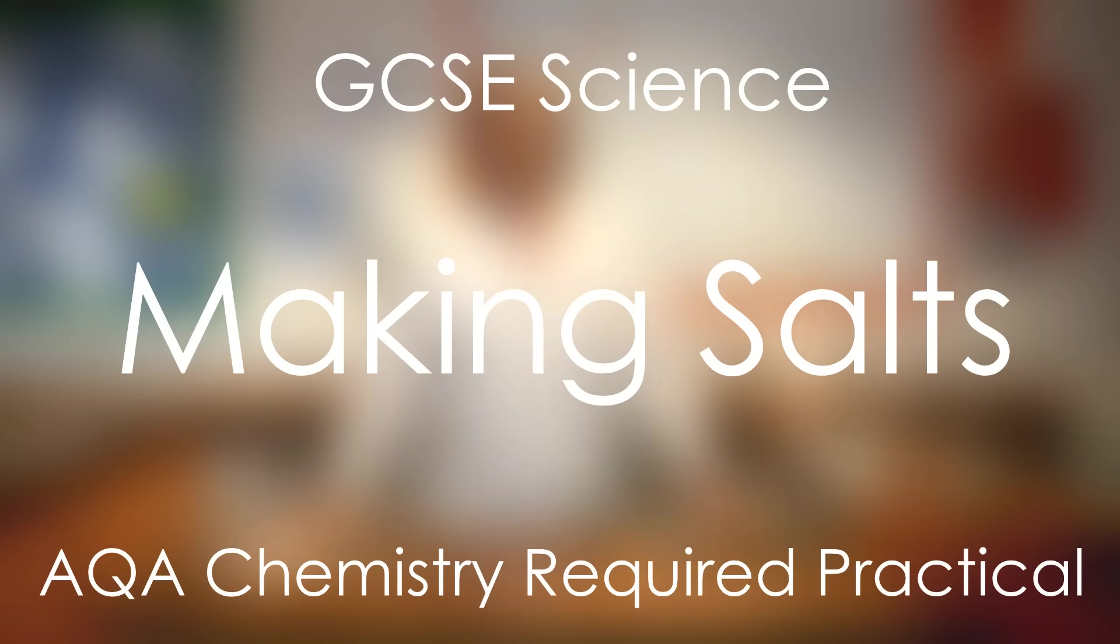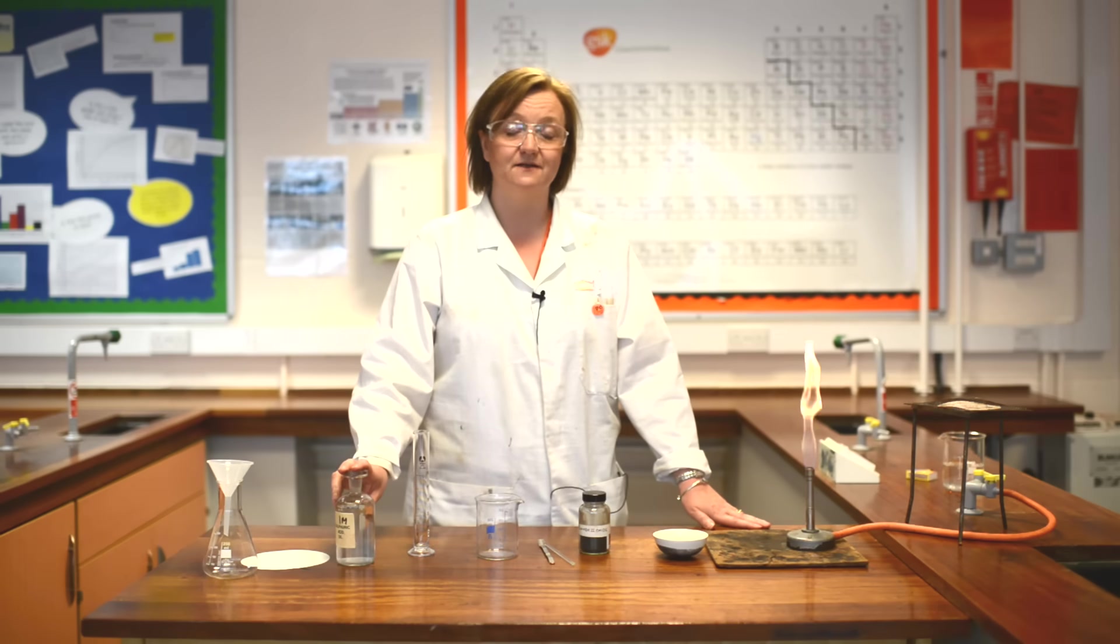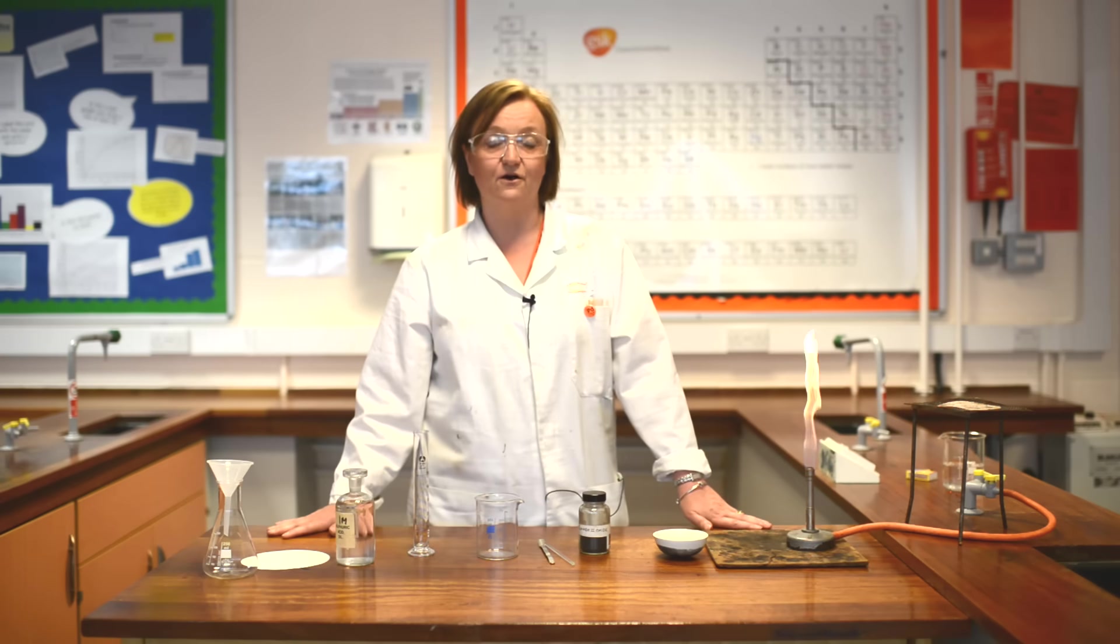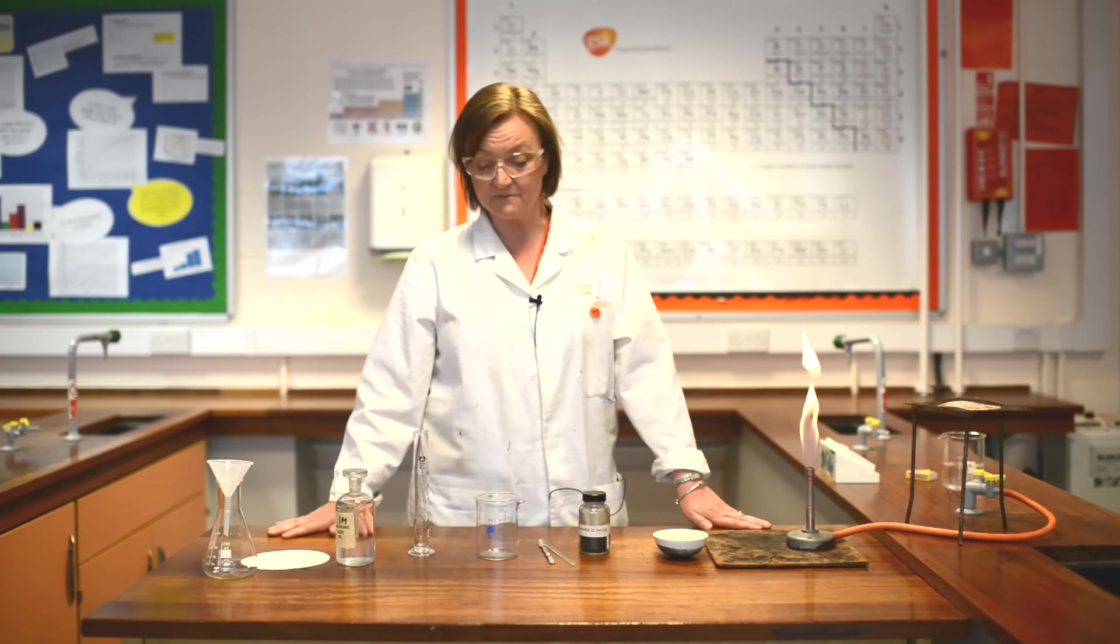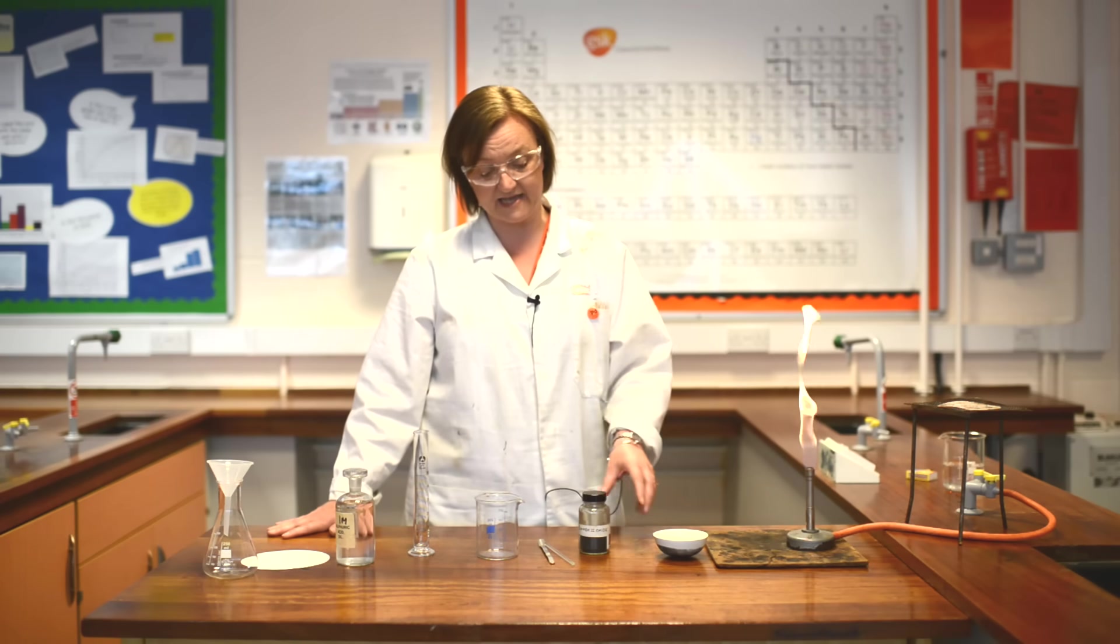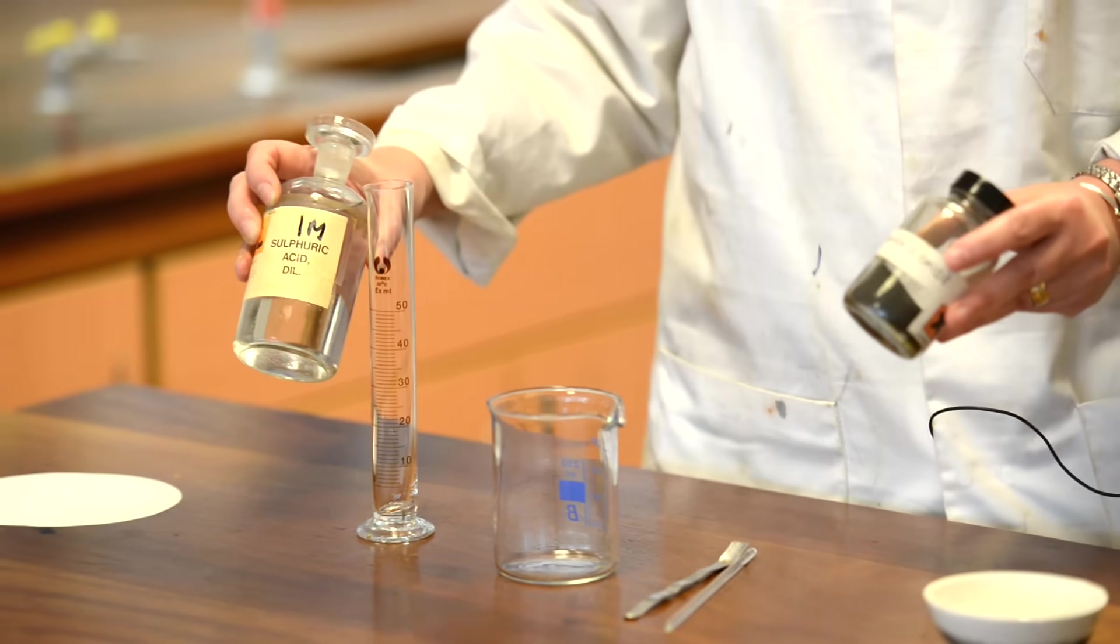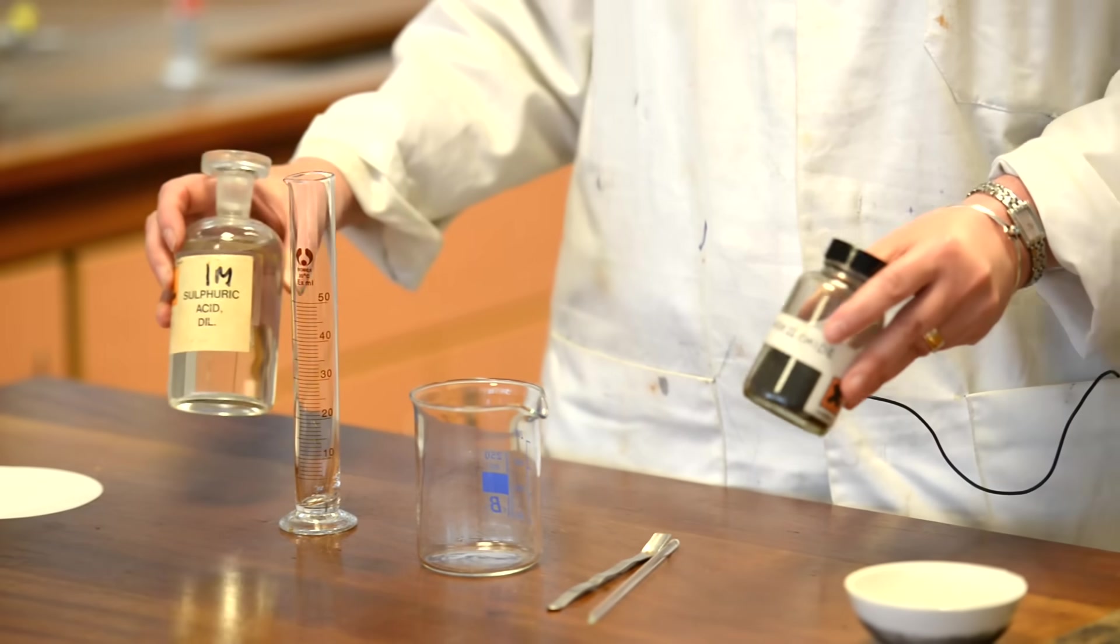In this video today, we are going to look at how to prepare a dry sample of a salt. A salt is made by the neutralization of an acid with a base, and the base we're going to use today is copper oxide. The acid is sulphuric acid, so we will be making copper sulphate.